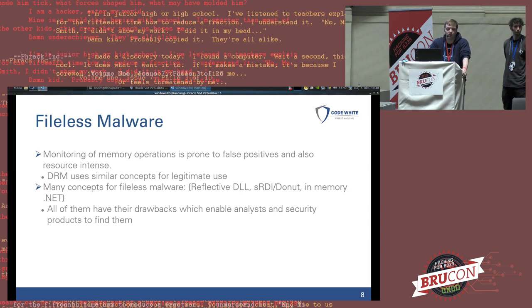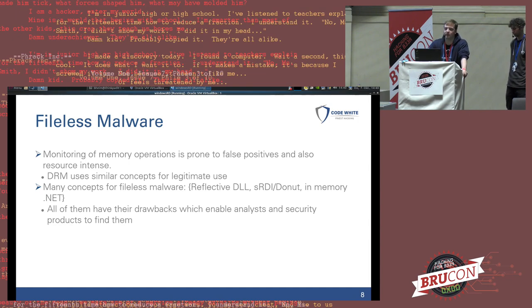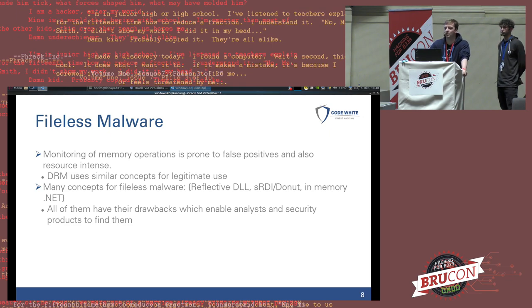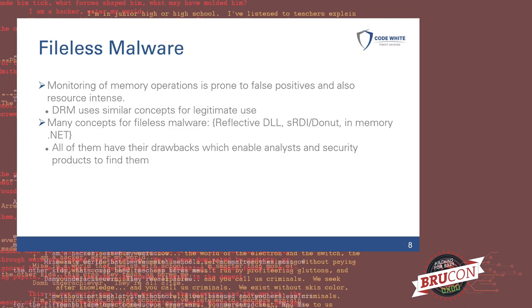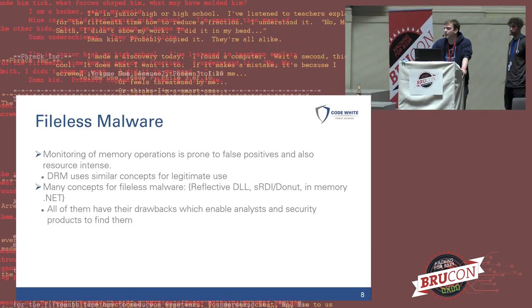There's another great advantage of fileless malware: for antivirus, it's really difficult to monitor in-memory operations. It is quite prone to false positives and also very resource-intensive. DRM uses quite similar concepts for legitimate use, meaning antivirus doesn't really know just because it finds certain memory artifacts whether something is actually malicious or not. There are many concepts for fileless malware — reflective DLLs, Donut, execution of .NET binaries in memory — and they all have drawbacks that enable analysts and security products to ruin your operation.